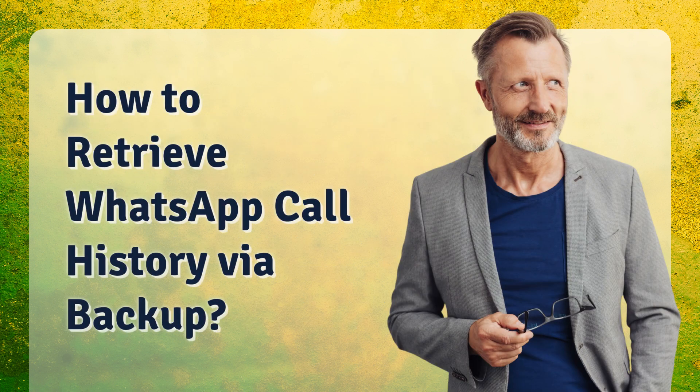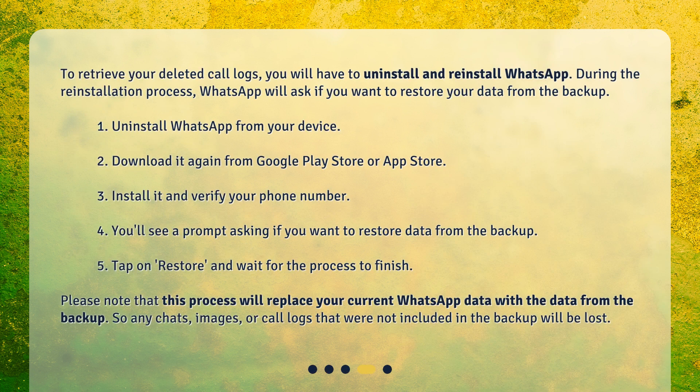To retrieve your deleted call logs via backup, you will have to uninstall and reinstall WhatsApp. During the reinstallation process, WhatsApp will ask if you want to restore your data from the backup. 1. Uninstall WhatsApp from your device. 2. Download it again from Google Play Store or App Store. 3. Install it and verify your phone number. 4. You'll see a prompt asking if you want to restore data from the backup. 5. Tap on Restore and wait for the process to finish. Please note that this process will replace your current WhatsApp data with the data from the backup, so any chats, images, or call logs that were not included in the backup will be lost.